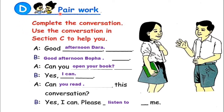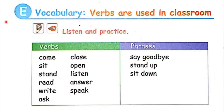Section D: Pair work. Complete the conversation. Use the conversation in Section C to help you. A: Good afternoon, Dara. B: Good afternoon, Bopha. A: Can you open your book? B: Yes, I can. A: Can you read the conversation? B: Yes, I can. Please listen to me. Okay, continue to Section E.